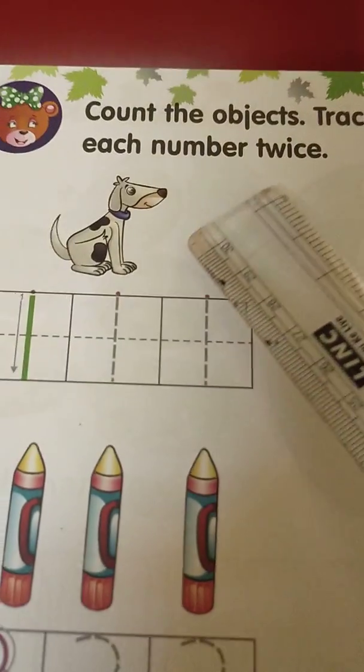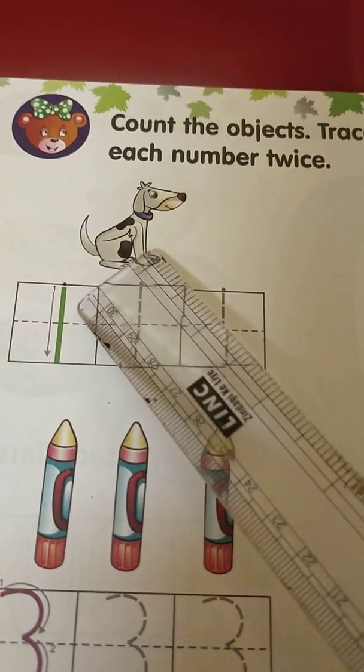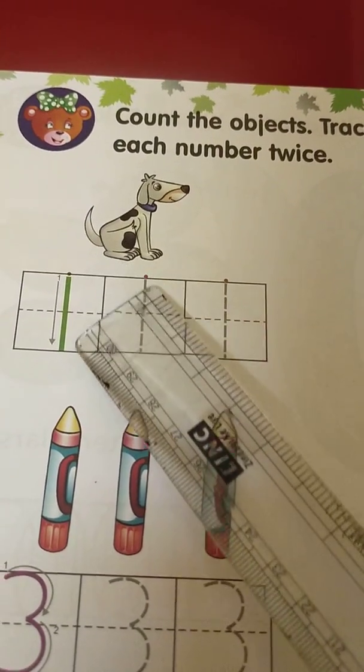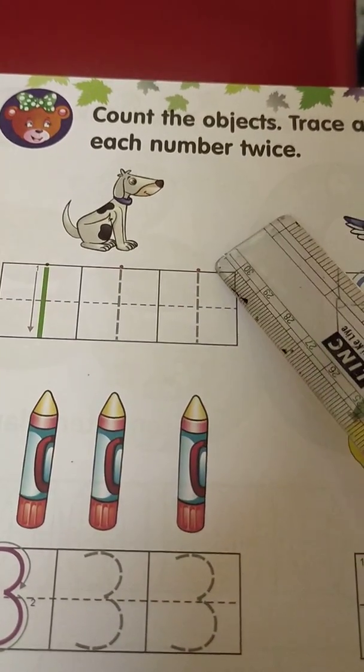Today we are going to count and write how many. The first one. How many dogs can you see here? One. So you write here, one. And then you practice again writing one, one.